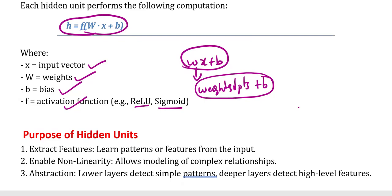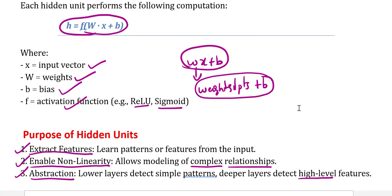The purpose of hidden units is: first, to extract features — they learn patterns or features from the input. Second, to enable non-linearity, which allows modeling of complex relationships. Third, abstraction — lower levels detect simple patterns and deeper levels detect higher-level features. So the three purposes are: extract features, enable non-linearity, and abstraction.